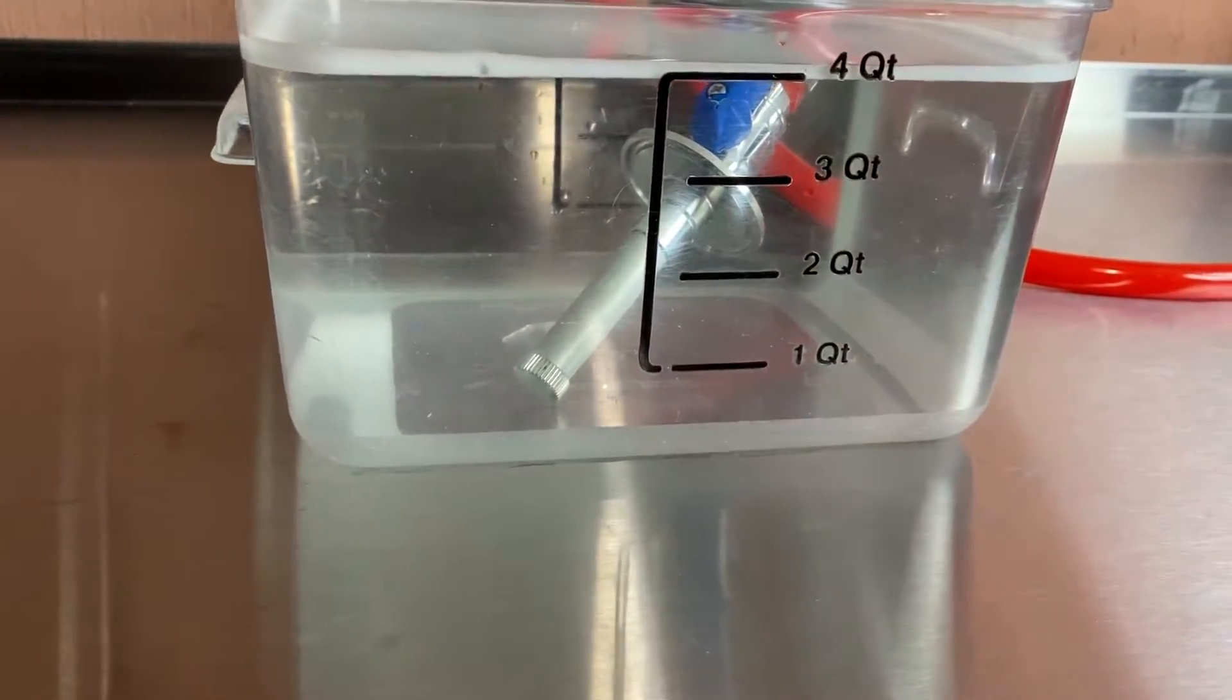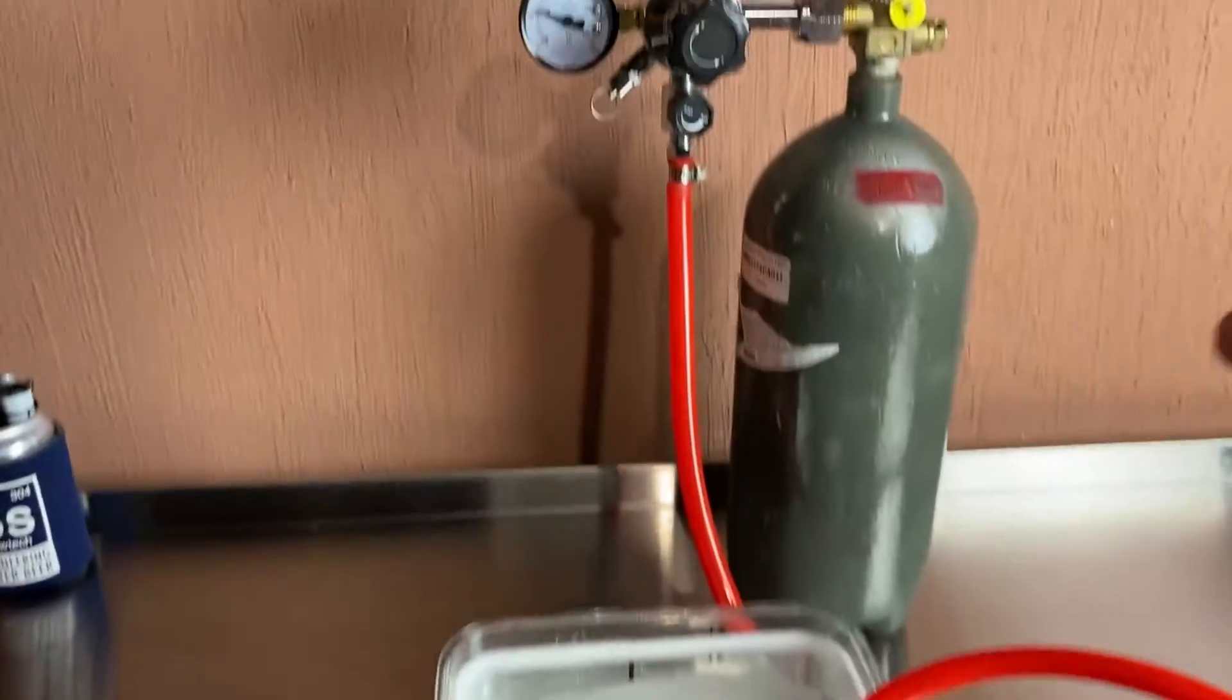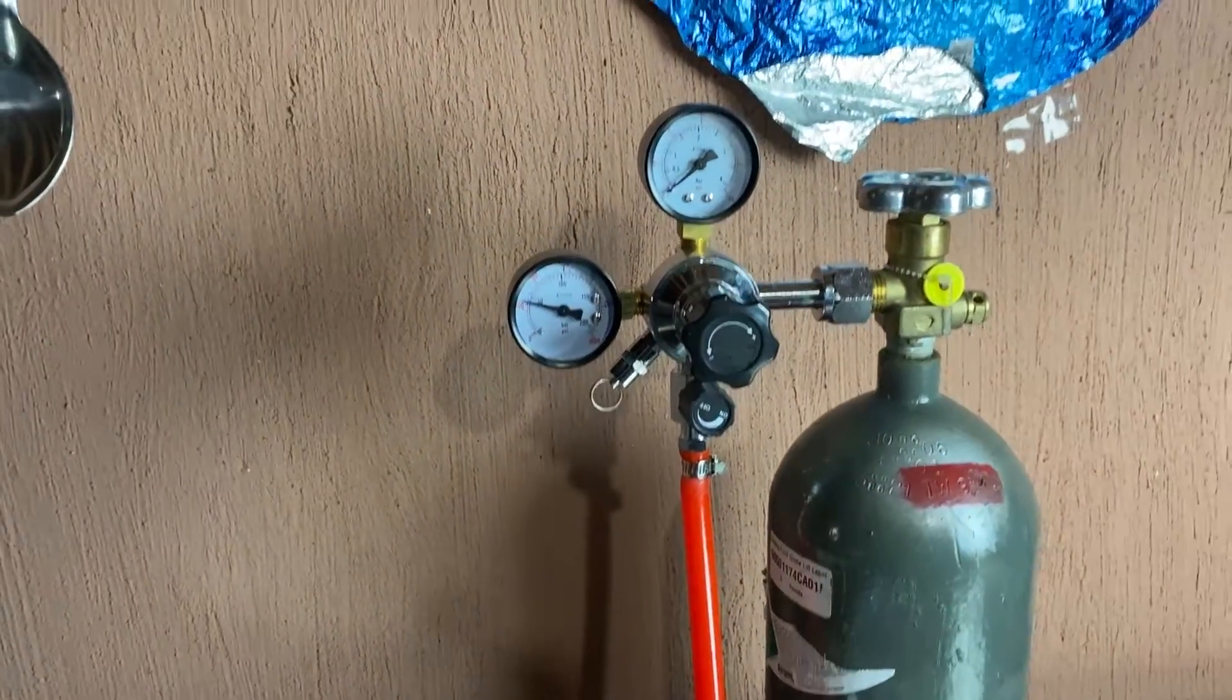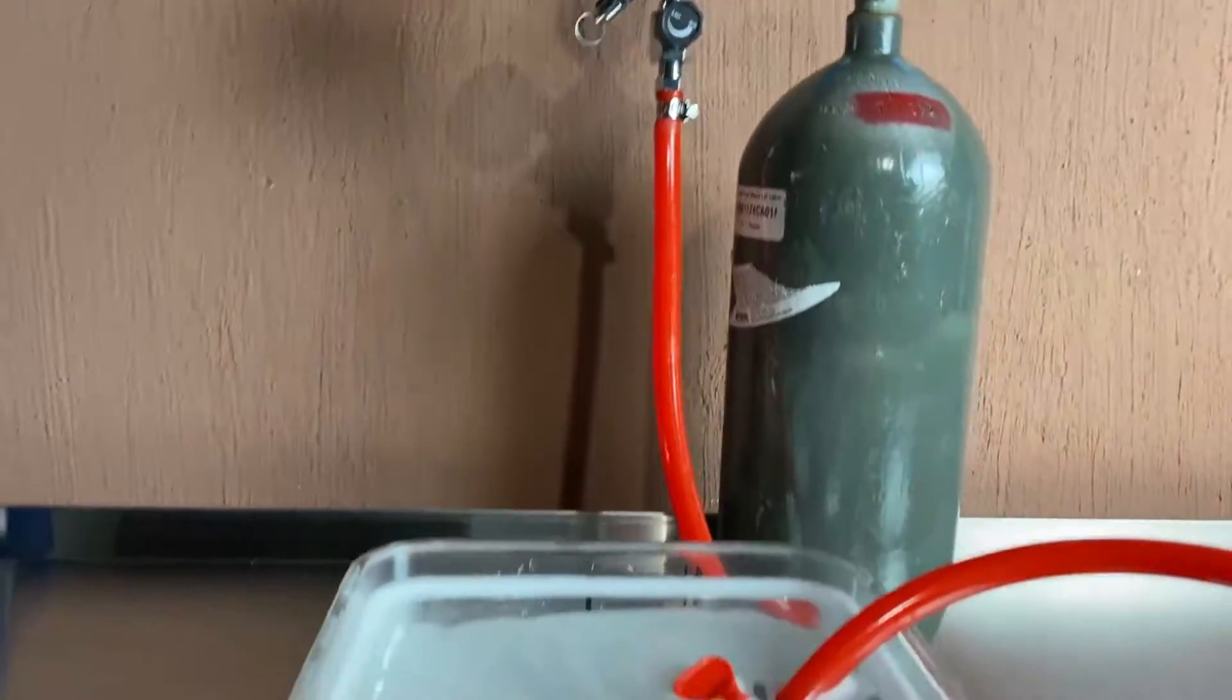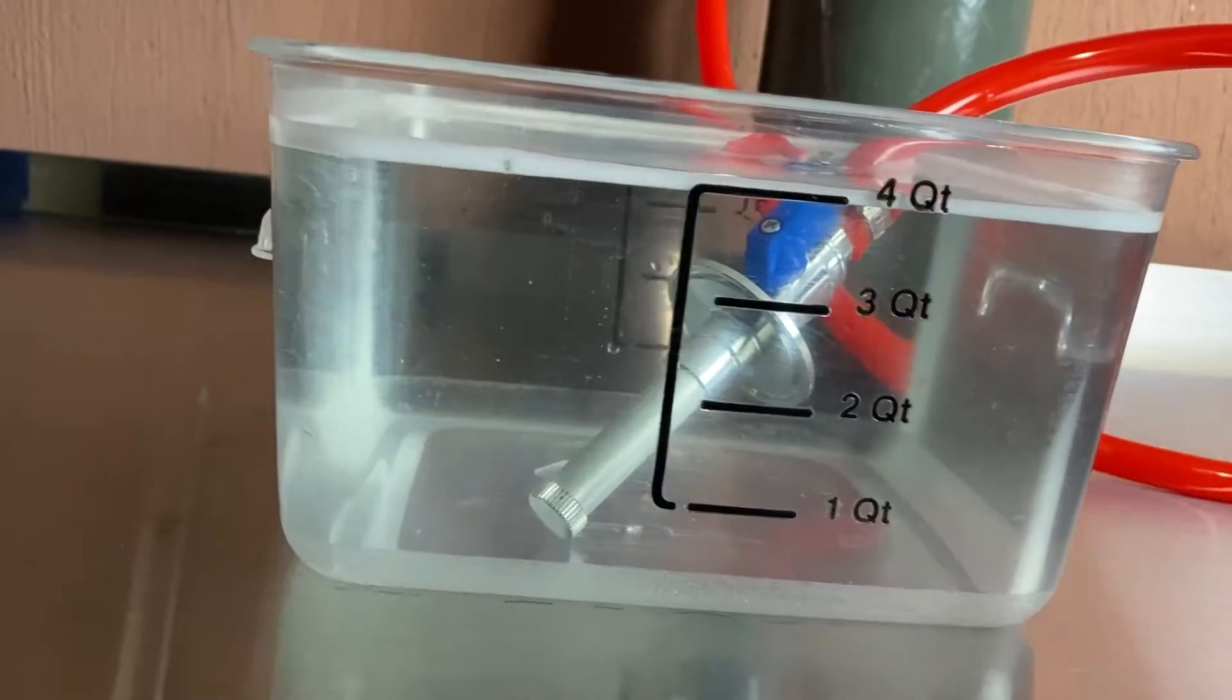To do this it's very simple. Get your stone set up in there, get everything ready, and you will just very gradually turn up the CO2 and make note of what your regulator says. I've already determined the wetting pressure of this stone so I will just gradually crank that up for you so you can see.